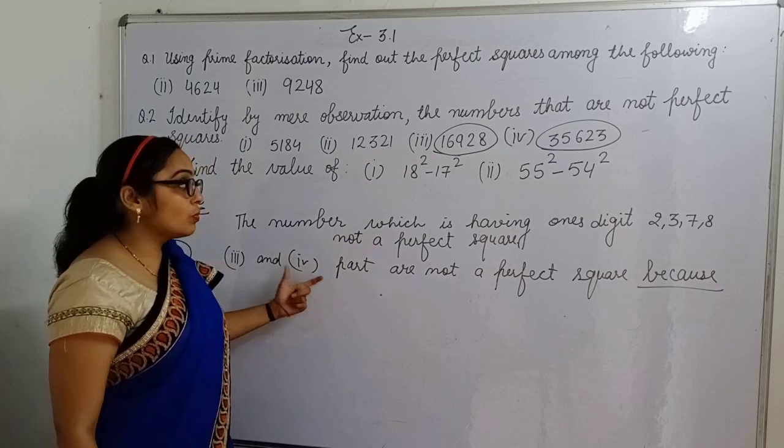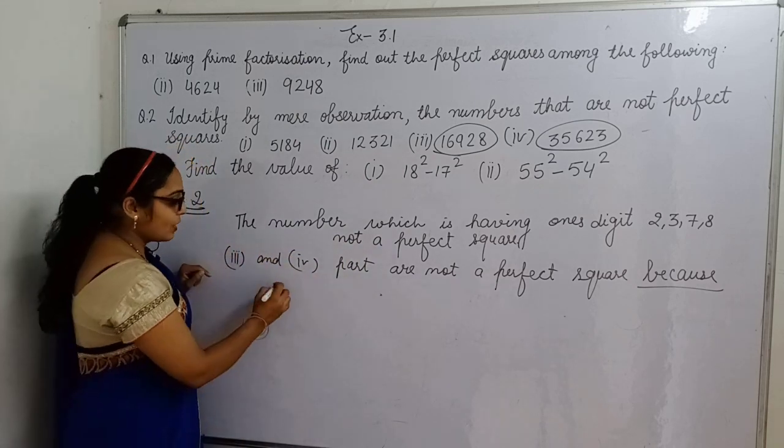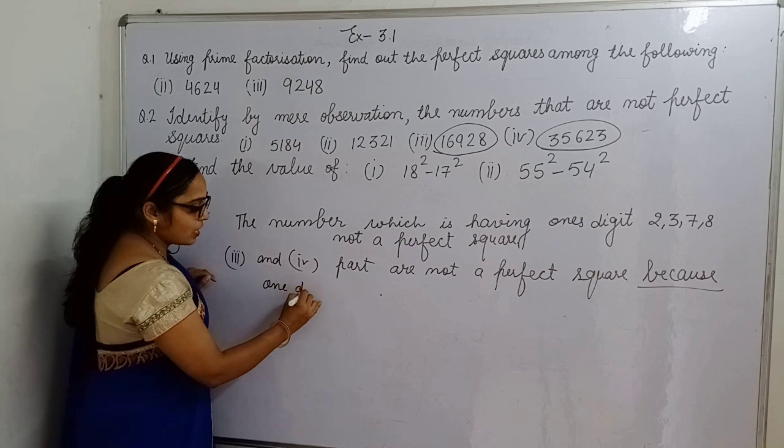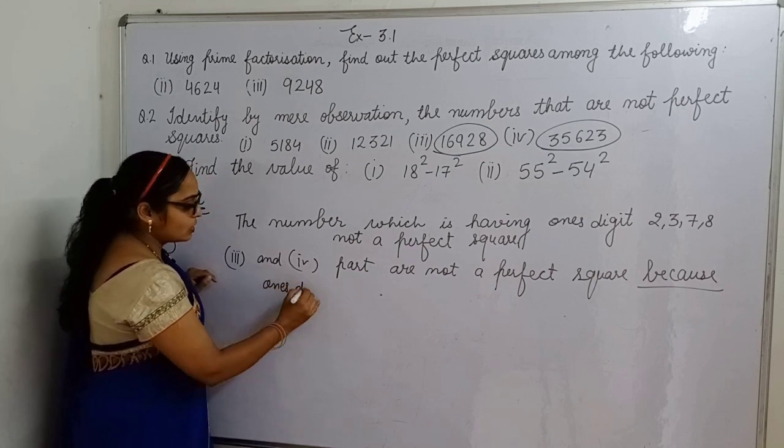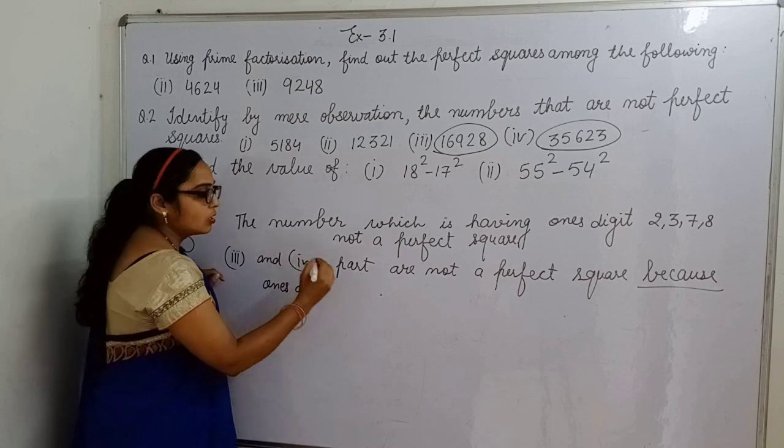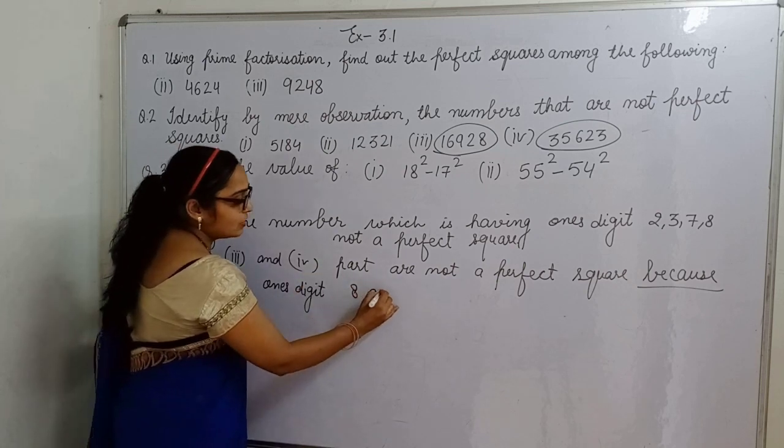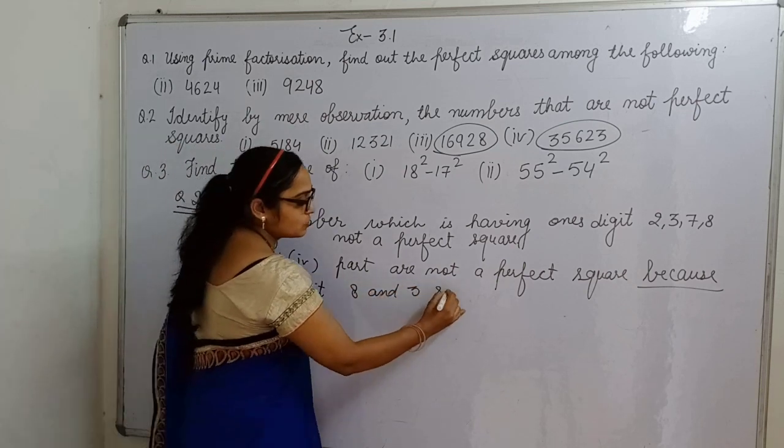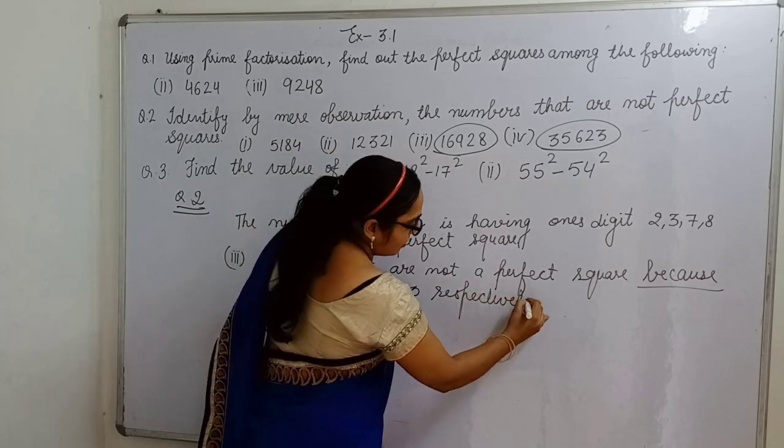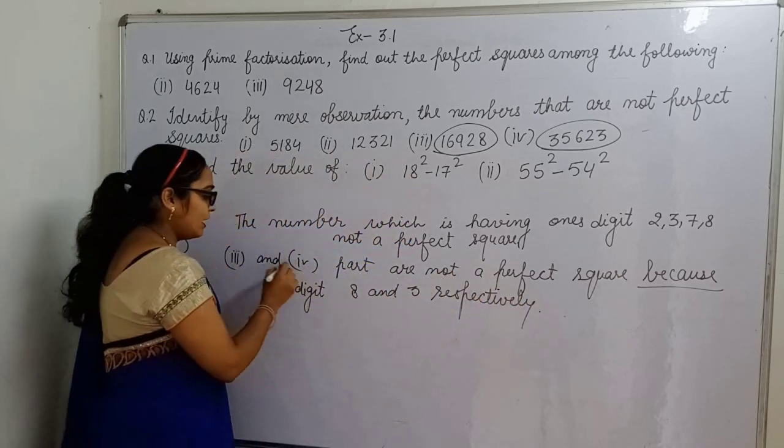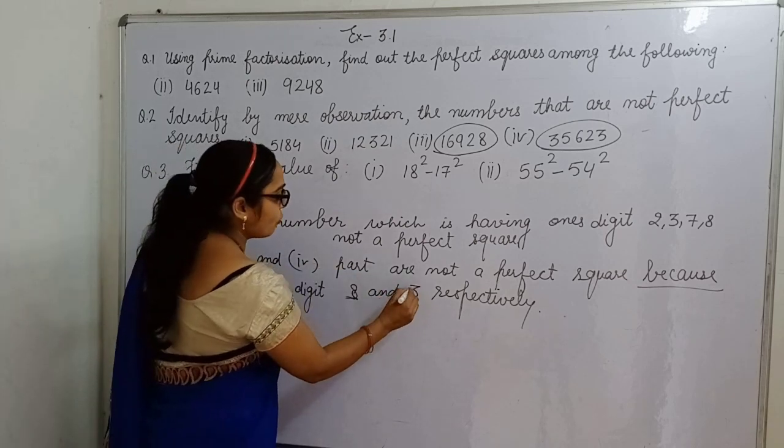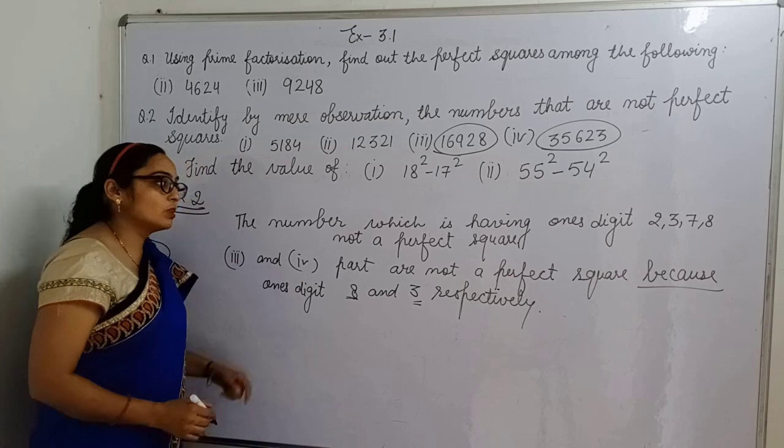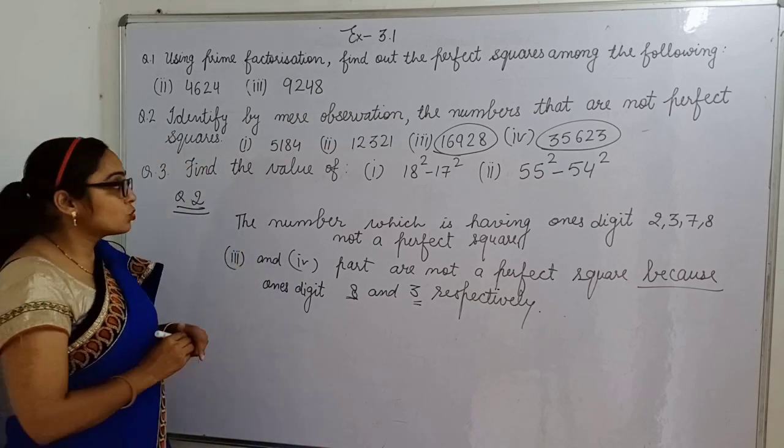Because aap yahaan reason toh aapne de hi diya hai, ki jinka unit digit kya hai - 2, 3, 7, 8. To aap yahaan bhi likh sakte ho: Because 3rd part is having unit digit kya aaya hua hai? Yahaan unit digit kya hai - 8, 3 respectively. It means 8 - 3rd part mein unit digit hai, aur 3 kya hai - 4th part mein unit digit hai. It means this is not a perfect square.